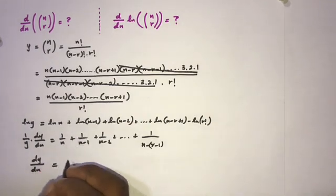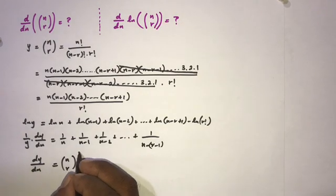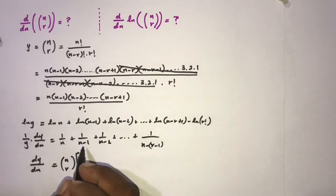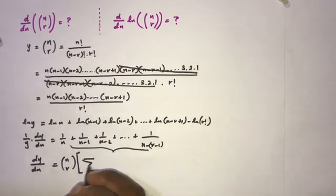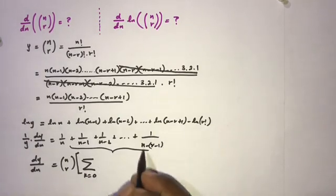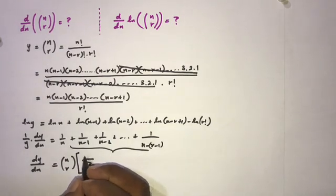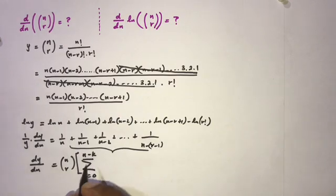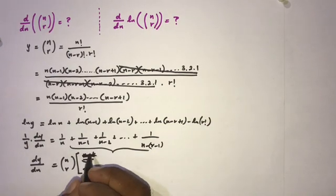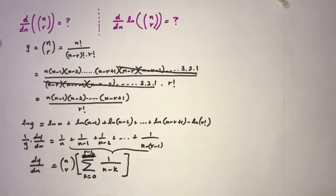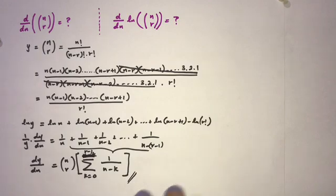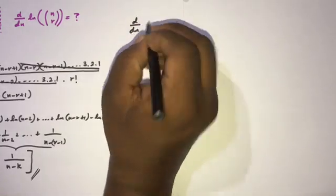So dy/dn equals n choose r times the sum 1/n plus 1/(n minus 1) plus 1/(n minus 2) and so on. Using sigma notation, this is the sum from k equal to 0 to r minus 1 of 1 over (n minus k). This is the answer to the first question.